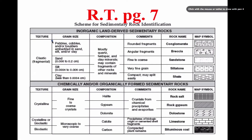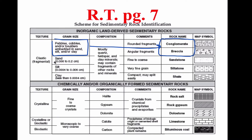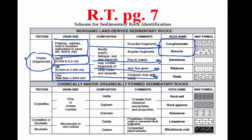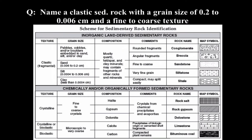Looking at page seven of our reference table, our largest grain size gives us conglomerate and breccia. Moving down to sand gives us sandstone. Silt, getting smaller, gives us siltstone. And clay will eventually form shale. So the difference in grain size gives us the name of our clastic sedimentary rocks.